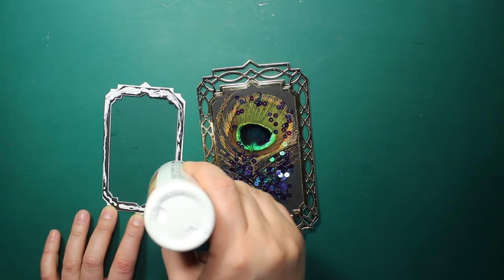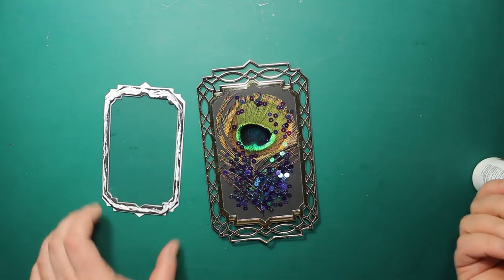Then I'm applying tacky glue onto the foam and sticking the small frame right on top of the feather.